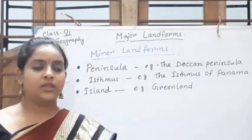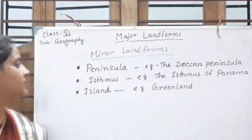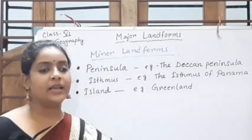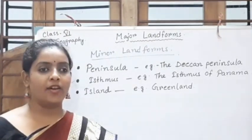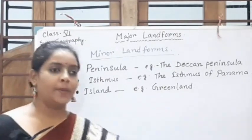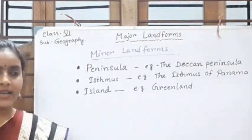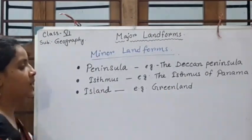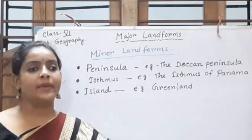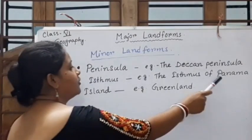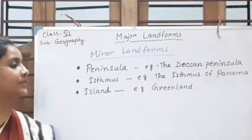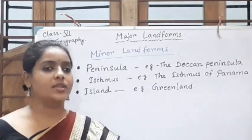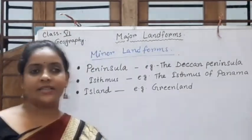Apart from these four major landforms, there are other minor landforms. First is peninsula — if you see the map of India, the southern part is surrounded by water on three sides and by land on one side. This is called a peninsula. Example is the Indian Peninsula. Number two is isthmus — a narrow stretch of land connecting two big landmasses. Example is the Isthmus of Panama, connecting North America and South America. Next is island — a landmass surrounded by water on all sides. Example is Greenland. A group of islands is called an archipelago.